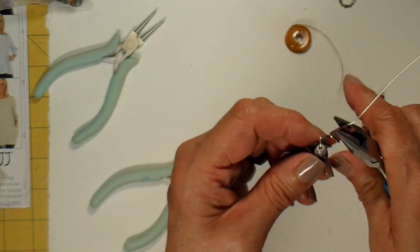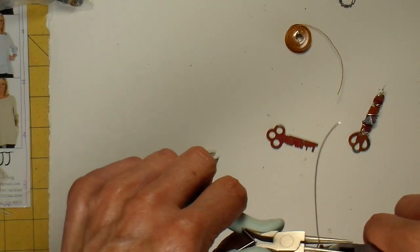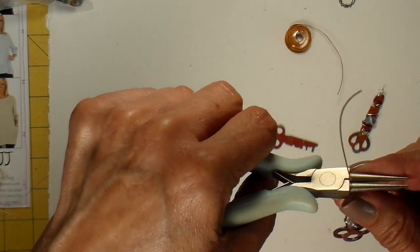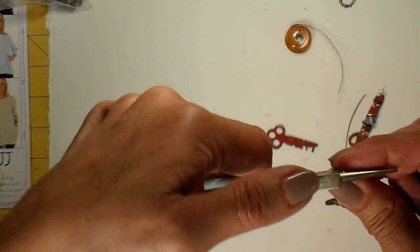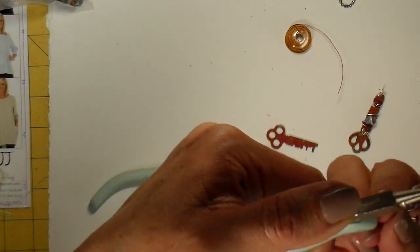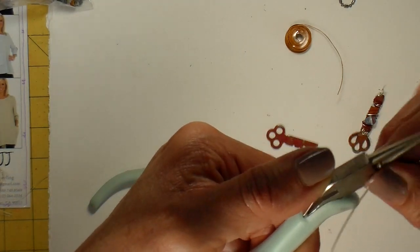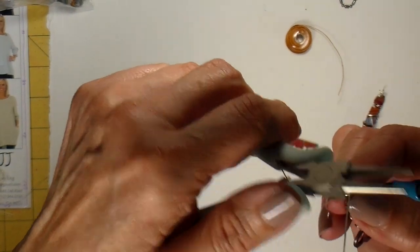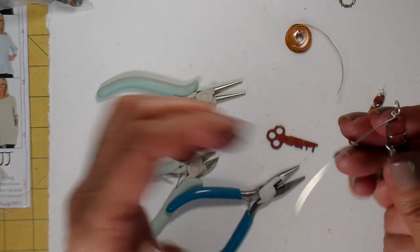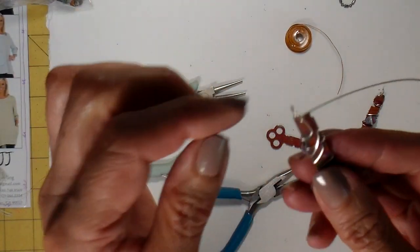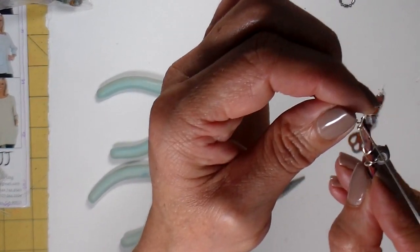Holding this wire in place, I'm taking my round nose again and forming the loop on the top. Just by bending this wire back over, bringing it around, and then wrapping this wire around the base of this little loop. I'm just straightening this up. So now I have a tail here, but I also have this loop on the top. It's kind of loose right now.